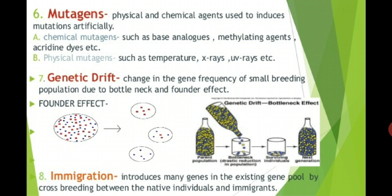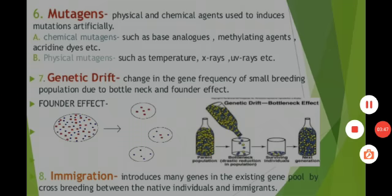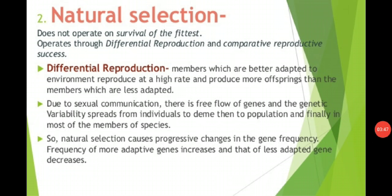The eighth source of genetic variability is immigration, which introduces many genes into the existing gene pool through cross-breeding between native individuals and immigrants.